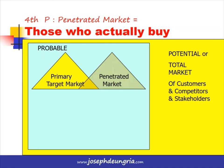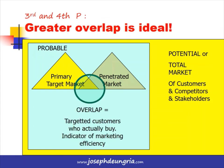The fourth P is the Penetrated market — the customers who actually buy. The penetrated market is not exactly the same as the primary target market. Some who buy were not targeted, and many who were targeted don't actually buy. The ideal is a greater overlap between the primary target market and the penetrated market — the greater the overlap, the better the marketing efficiency.